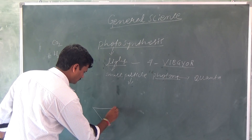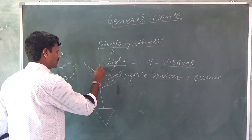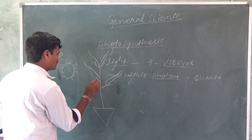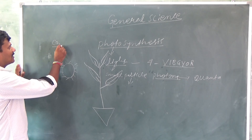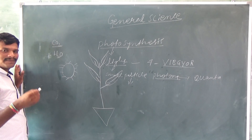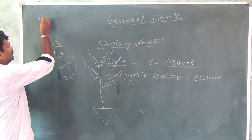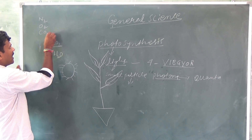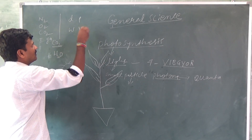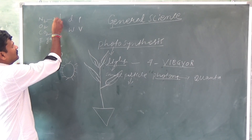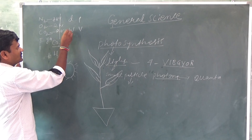Here is the sun, and we take one plant. Imagine how this plant is growing and how plants are preparing food. From the atmosphere, carbon dioxide is present — the air is called a mixture of gases. In the atmosphere there are several gases: nitrogen, oxygen, carbon dioxide, inert gases, dust particles, and water vapor. Nitrogen is 78%, oxygen is 21%, and carbon dioxide is 0.033%.